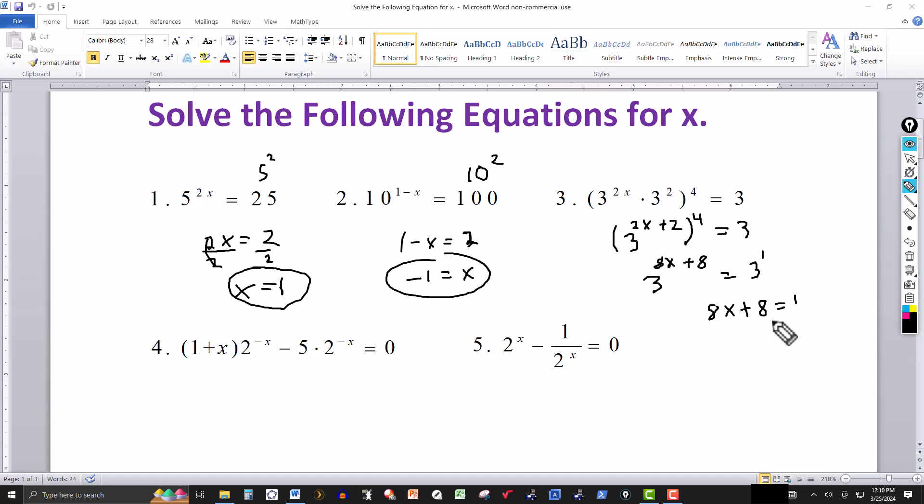Solve for x, take the 8 over, I get 8x here, and 1 minus 8 is minus 7. Divide by 8 to solve for x, and we get x is equal to negative 7 over 8. Again, you can check these by plugging back into the original equation.